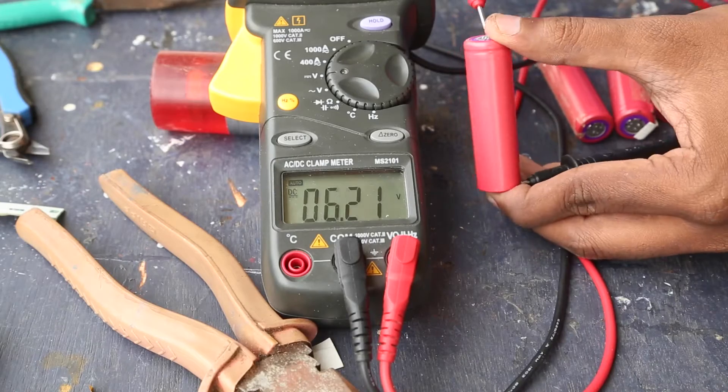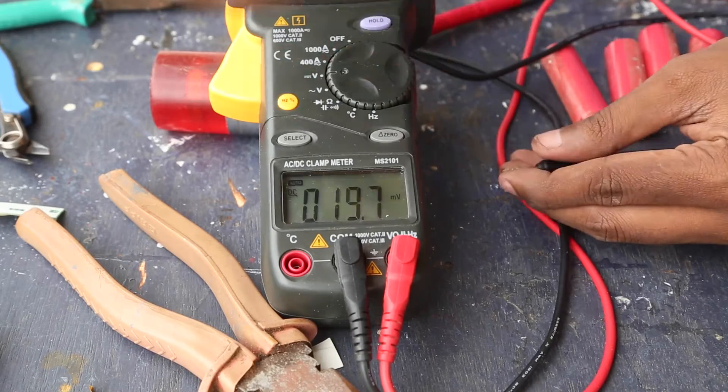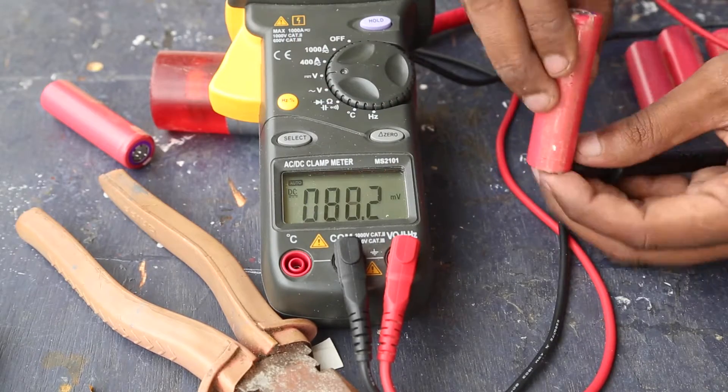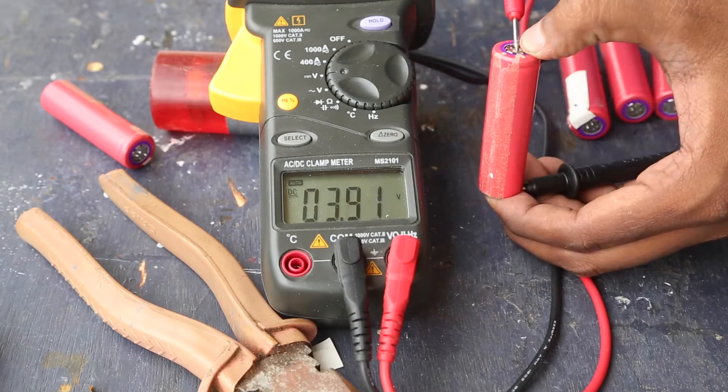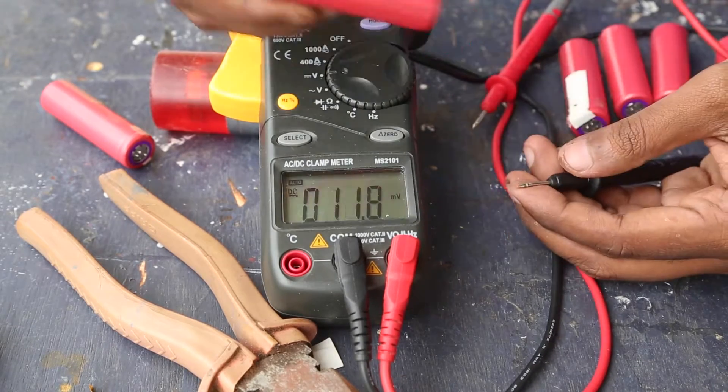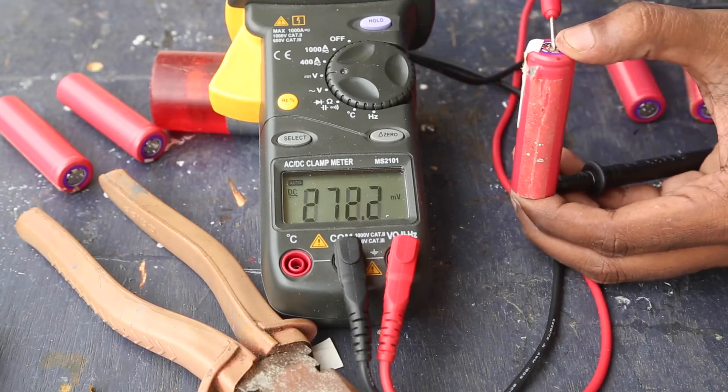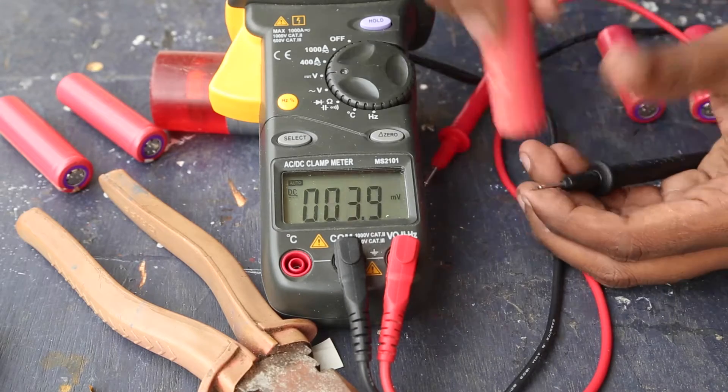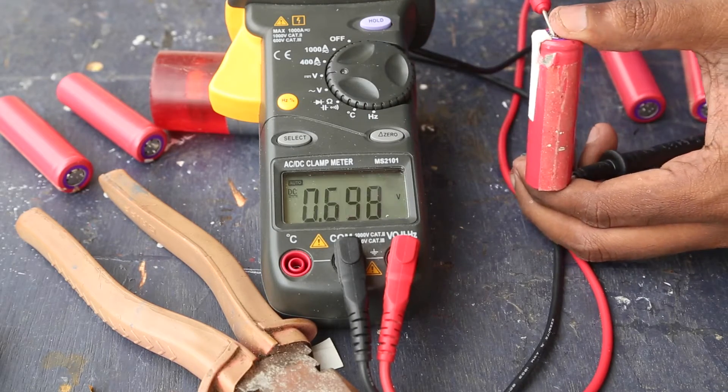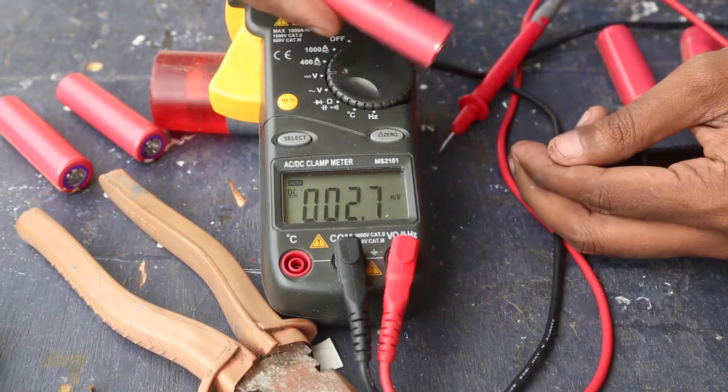Now I set to test the batteries. This one is good because it measures around a good 3.8 volts. The second one is also good. But the third one measures only 0.6 volts. So this is a faulty one. Maybe because of this the battery failed.